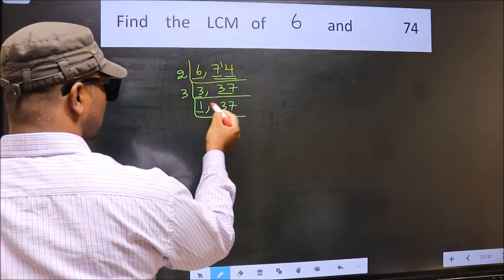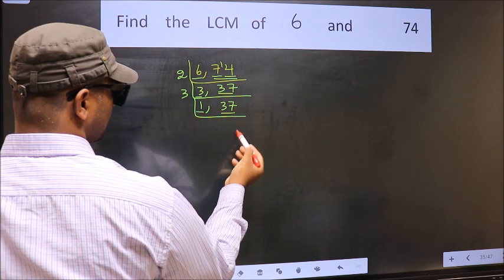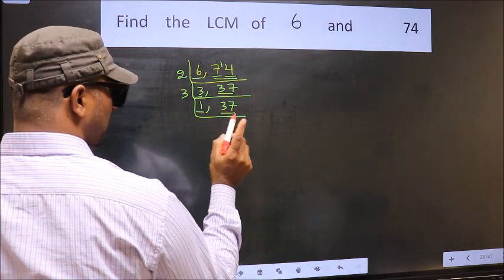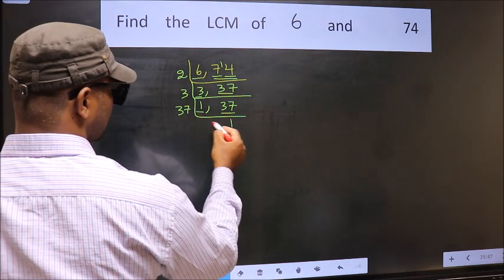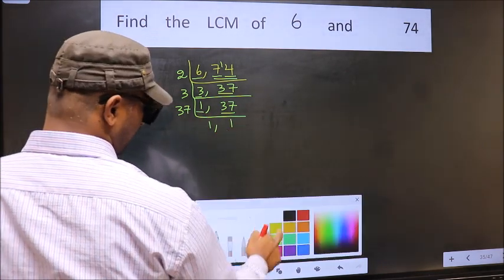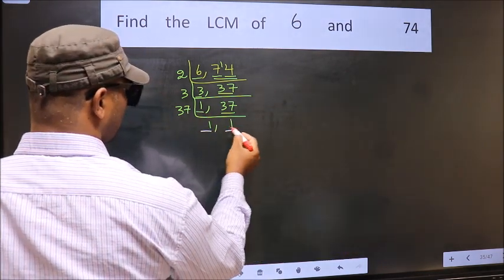We got 1 here so focus on the other number 37. 37 is a prime number so we take 37 once 37. We got 1 in both the places.